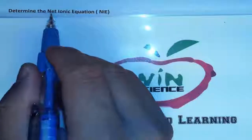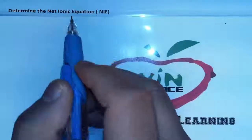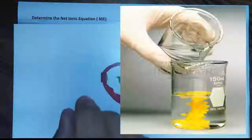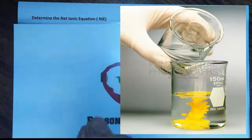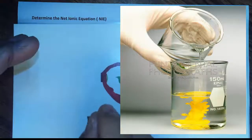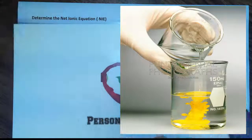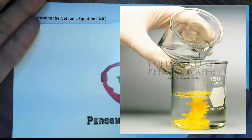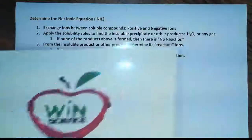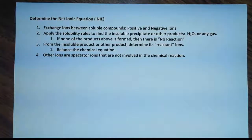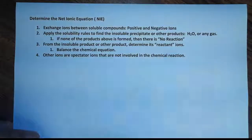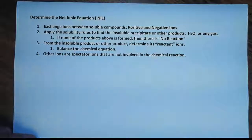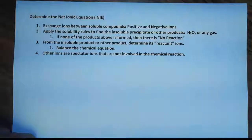In this lesson, we are going to learn how to determine the net ionic equation, or NIE. The concept of the net ionic equation is that when we have two solutions and we mix them together, how do we know if there is going to be a reaction? Basically, there are steps. But before we look at the steps, we need to realize a reaction only occurs when we mix two solutions together.